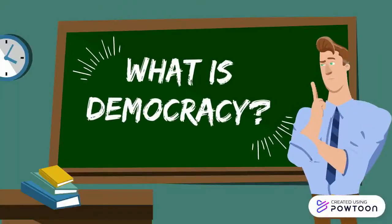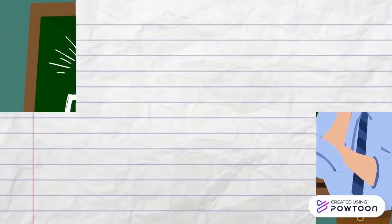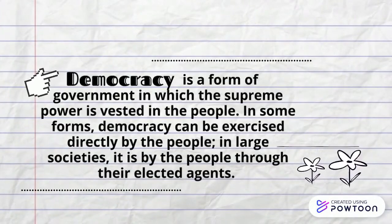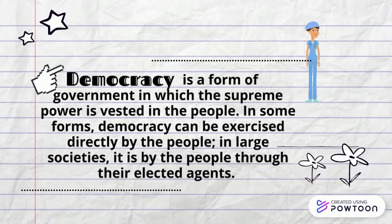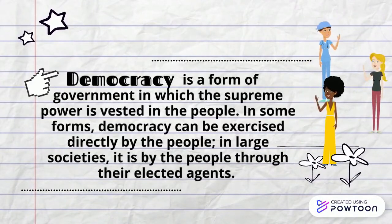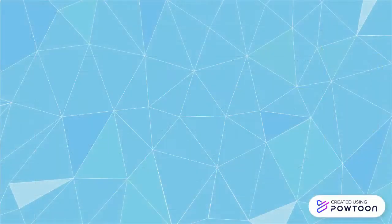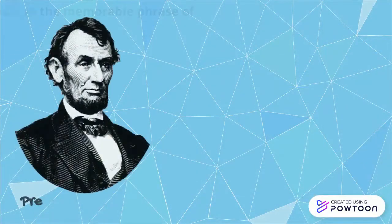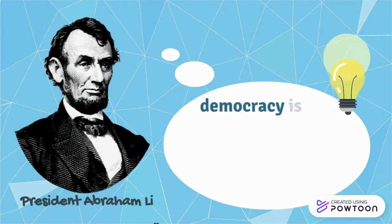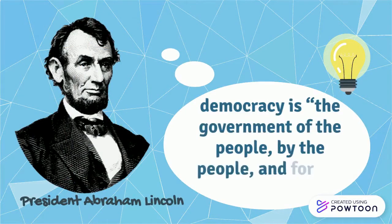What is democracy? Democracy is a form of government in which the supreme power is vested in the people. In some forms, democracy can be exercised directly by the people. In large societies, it is by the people through their elected agents — or in the memorable phrase of President Abraham Lincoln, democracy is a government of the people, by the people, and for the people.